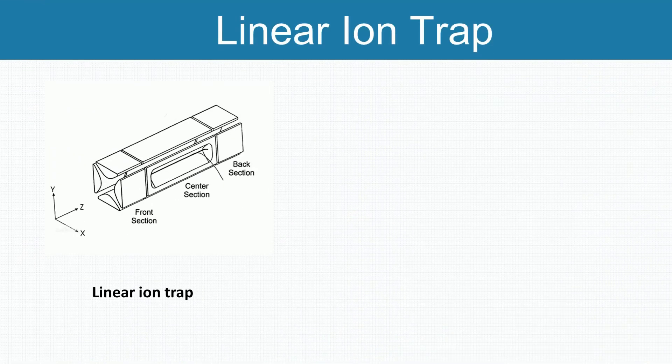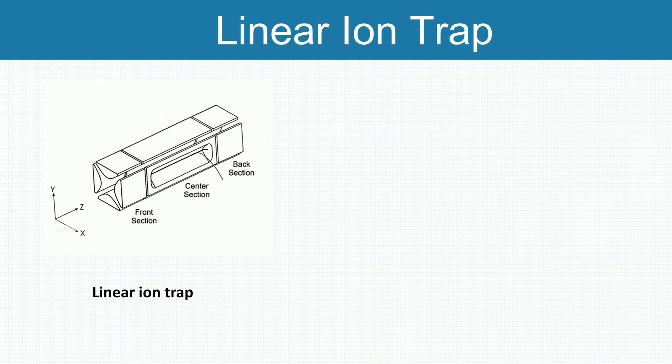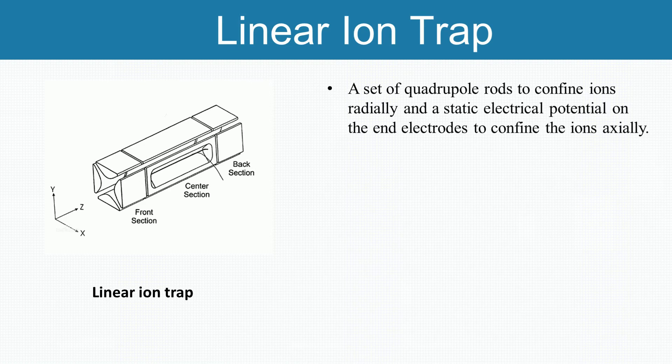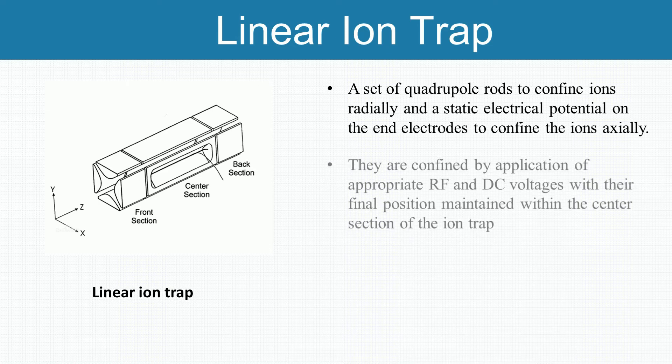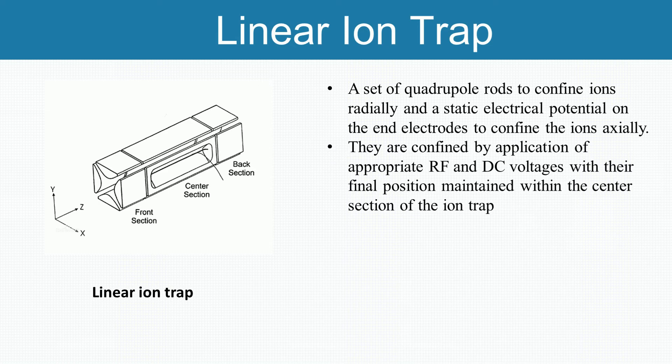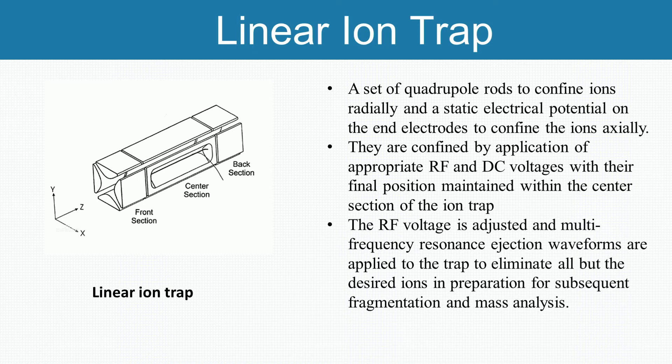By creating a potential well for the ions, the linear ion trap can be used as a mass filter or as a trap. The linear ion trap uses a set of quadrupole rods to confine ions radially by a two-dimensional radio frequency field, and a static electrical potential on end-electrodes confines the ions axially. Ions are confined by application of appropriate radio frequency and direct current voltages, with their final position maintained within the center section of the ion trap. The radio frequency voltage is adjusted, and multi-frequency resonance ejection waveforms are applied to the trap to eliminate all but the desired ions in preparation for subsequent fragmentation and mass analysis.